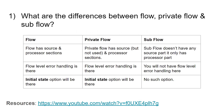The first question is: what are the differences between flow, private flow, and sub flow? So this is the table I have created. A flow has source and processor sections — we'll have two parts when you drag your flow onto the canvas, and we'll configure the source as well as the processors.